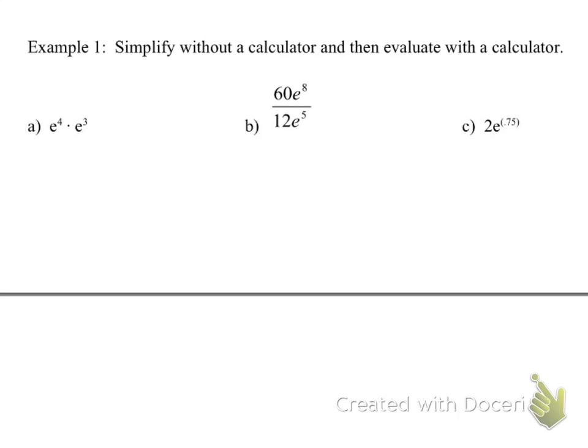So these first examples, we're going to simplify without a calculator, and then we're going to evaluate them using our calculator. So just like if we had a number or a variable, we're going to add our exponents if we have e^4 times e^3, and get e^7. Popping that into your calculator, you'll get 1096.6332. And until further notice, I would like you to round everything to four decimal places.